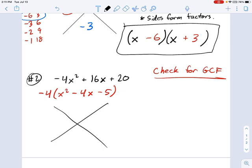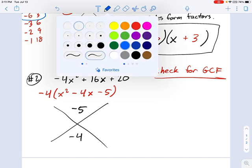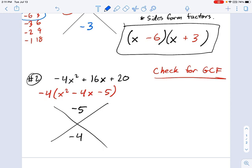Here's my big X. I'm going to take negative 5 times 1. That goes up here. I'm going to take B, the negative 4. That goes down here.